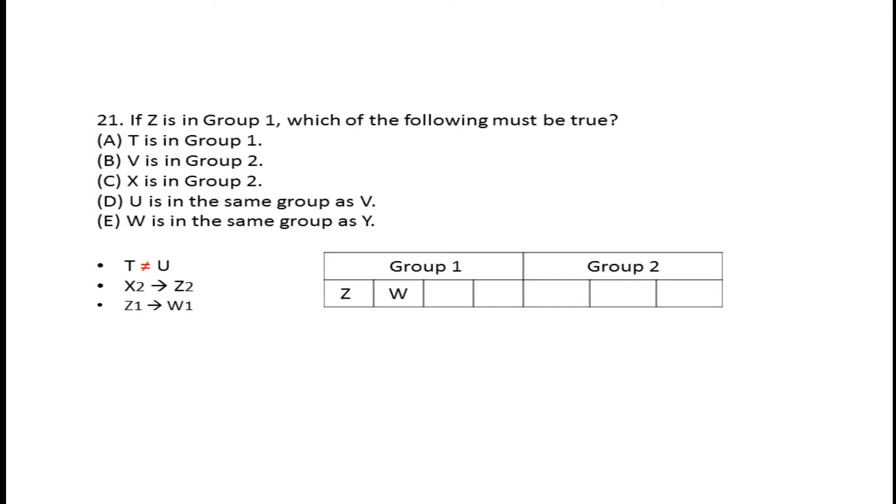Either T can be in Group 1 or U can be in Group 1. Option E says T is in Group 1. Group 1 can have T or U, so this is not certain - it's a possibility, not a must. Option E is eliminated.